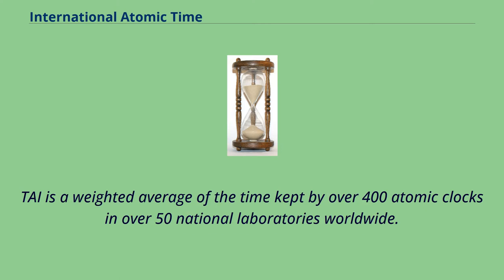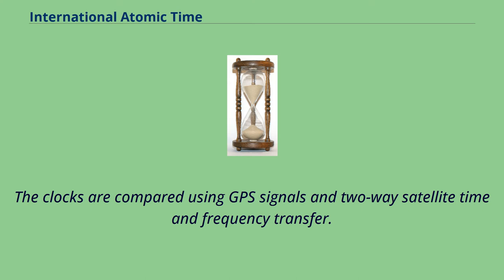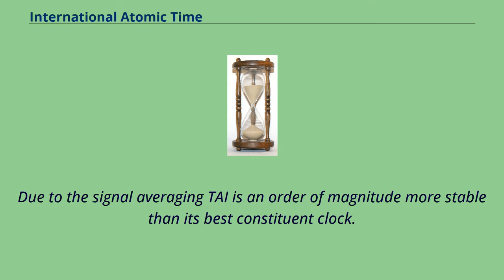TAI is a weighted average of the time kept by over 400 atomic clocks in over 50 national laboratories worldwide. The majority of the clocks involved are cesium clocks. The International System of Units definition of the second is based on cesium. The clocks are compared using GPS signals in two-way satellite time and frequency transfer. Due to the signal averaging, TAI is an order of magnitude more stable than its best constituent clock.